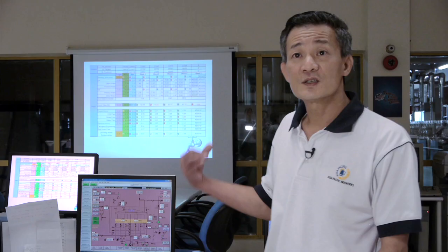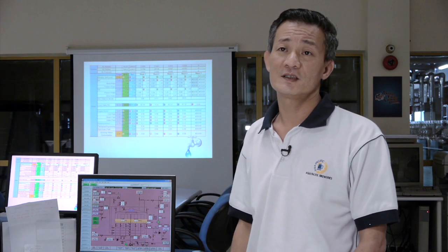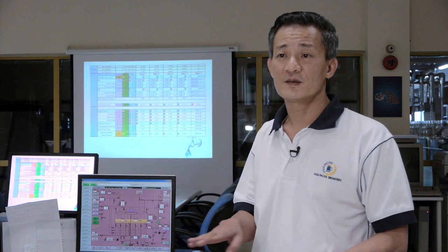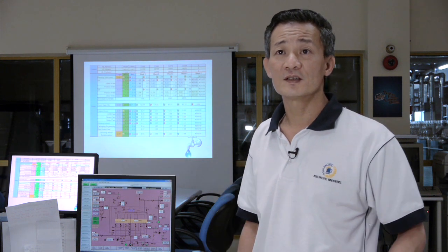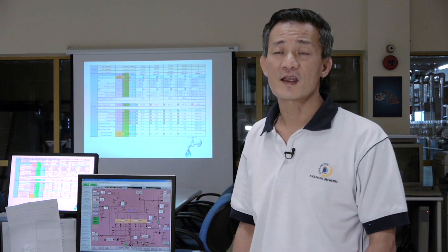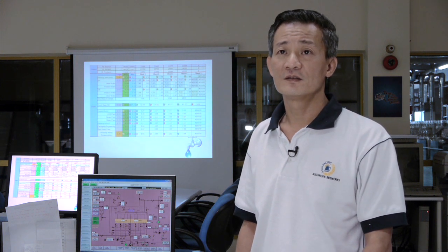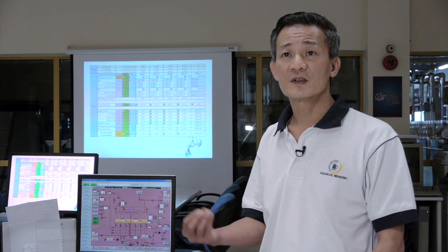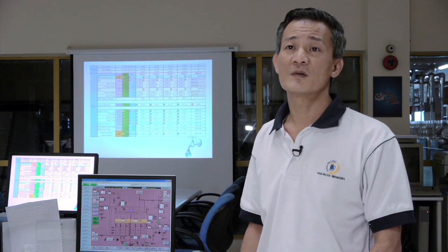We're using this to monitor daily utility consumption. We built a traffic light system and set a target plus or minus 2% to our set target. With the traffic light green, yellow, and red indicators, we know our performance.